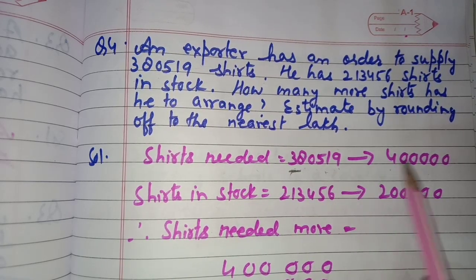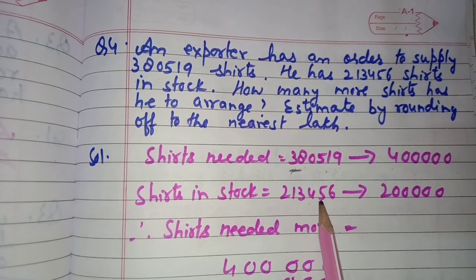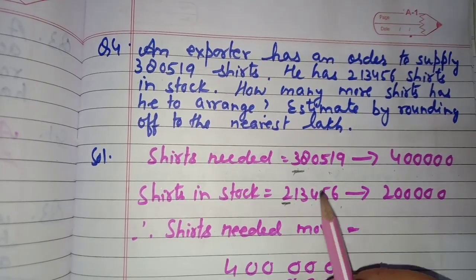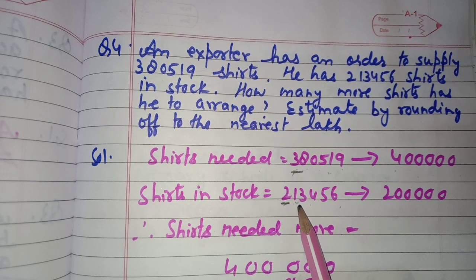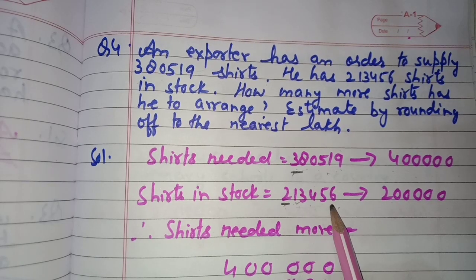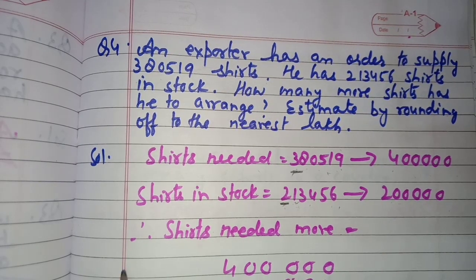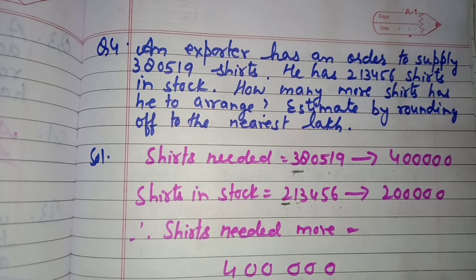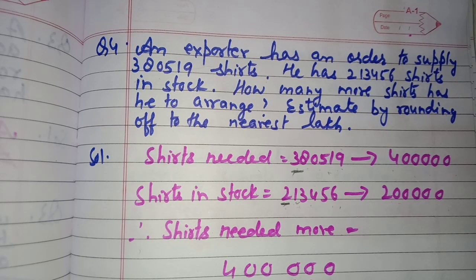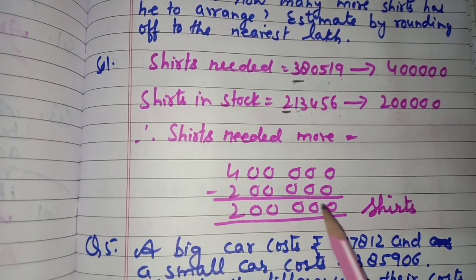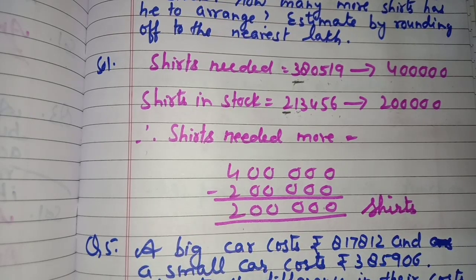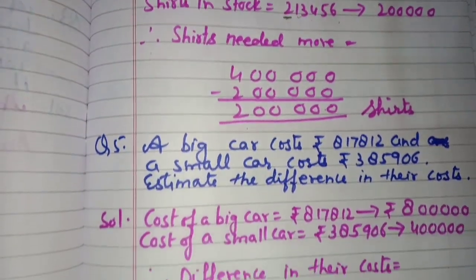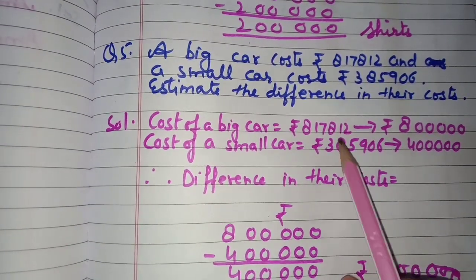Shirts in stock: 2,13,456 — the digit to the right of the lakhs place is 1, less than 5, so 2 remains as it is and all following digits become zeros, giving 2 lakh. Subtracting: 4 lakh minus 2 lakh = 2 lakh. The exporter needs to arrange 2 lakh more shirts to complete the order.